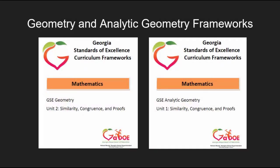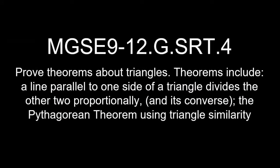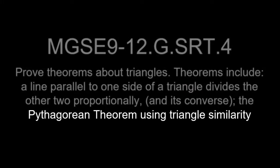This activity is an adaptation of the task titled Triangle Proportionality Theorem, which can be found in Unit 2 of the GSE Geometry Frameworks and in Unit 1 of the GSE Analytic Geometry Frameworks. This task has students investigate the side splitter theorem. Another component of standard G-SRT-4 is the proof of the Pythagorean theorem using triangle similarity.